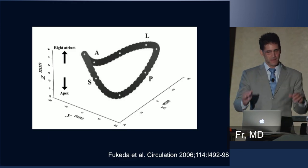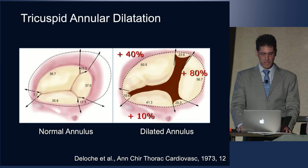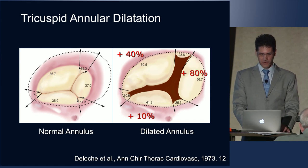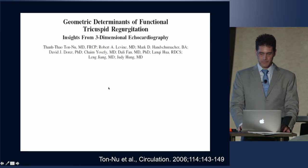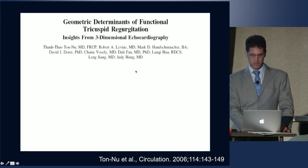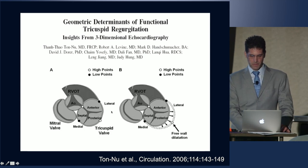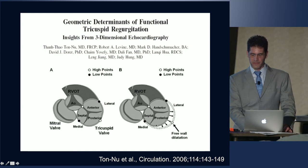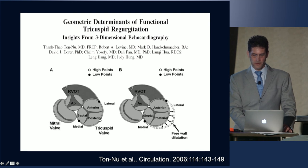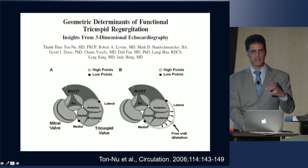The tricuspid valve is three-dimensional — it's not a flat valve. When we see tricuspid valve disease, mainly in the form of tricuspid annular dilatation, we see the direction in which the valve dilates, which is based on the free wall of the right ventricle. The directionality of tricuspid annular dilatation is mainly along the anterior and posterior regions of the valve, along this commissure — not so much in the region intimately associated with the fibrous skeleton, which is mainly held in place.